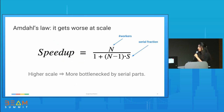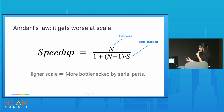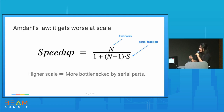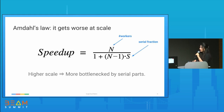By Amdahl's law, the speedup you get from parallelizing your pipeline is heavily dependent on the serializable work that you do. The more serializable work you have in your pipeline, the less you can parallelize it, because the scalability will drop. For example, if there's one worker spending 100% of CPU utilization and the rest are idle, even adding more workers won't scale, because it's still taking that serializable time. So serializable work becomes a bottleneck for scalability.